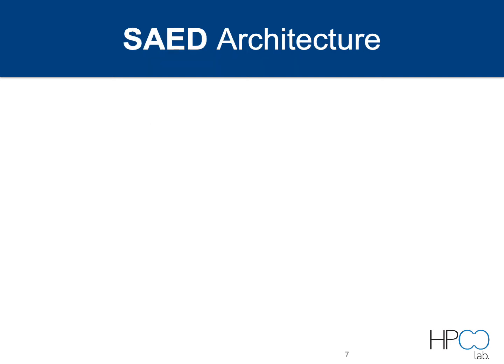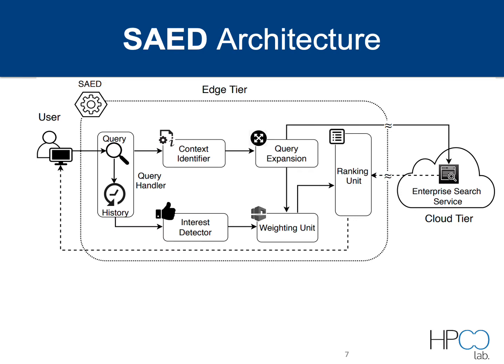Let's talk about the architecture. Here you see the overall architecture of SAED. It is a three-tier architecture: user tier, edge tier, and cloud tier. In the edge tier, we perform query processing, and we also weight the query for personalized search. The SAED takes input of a query from the user and then the query is sent to SAED for further processing.